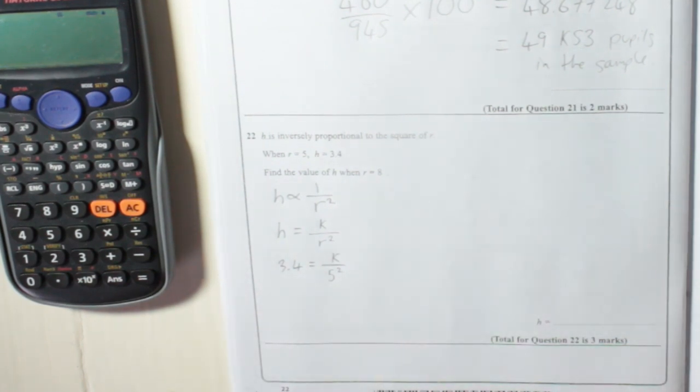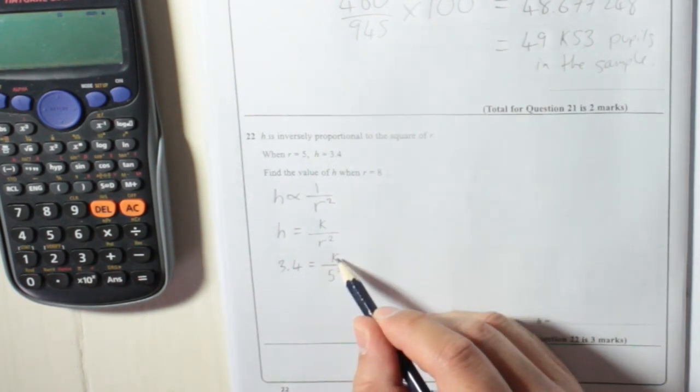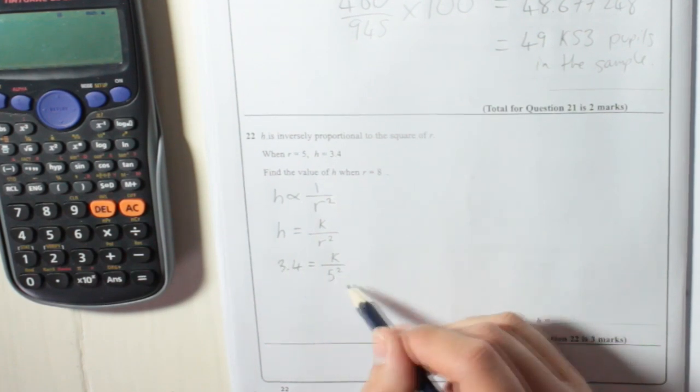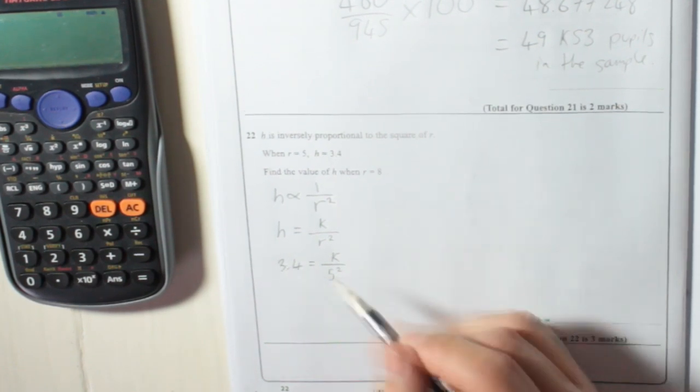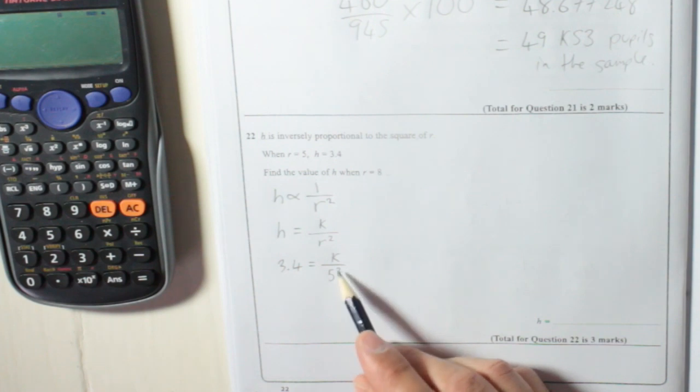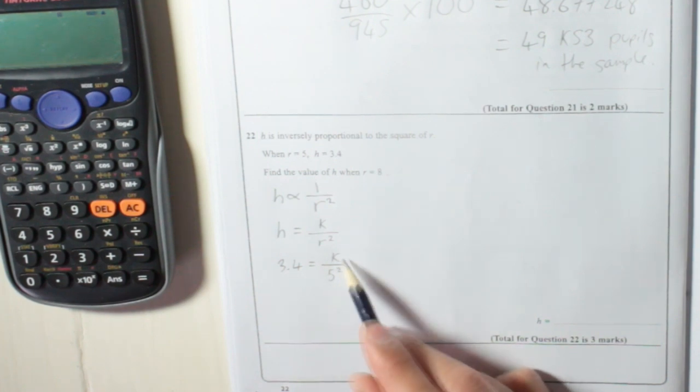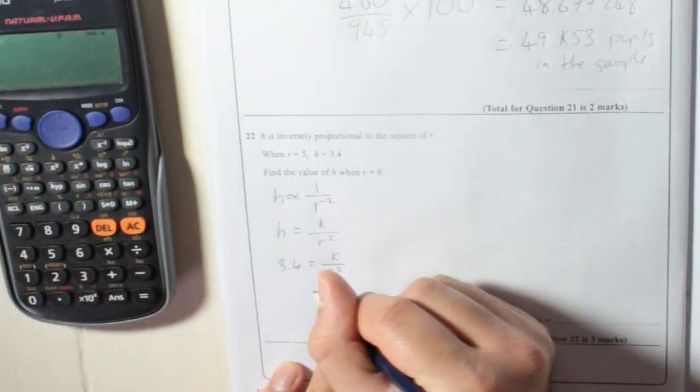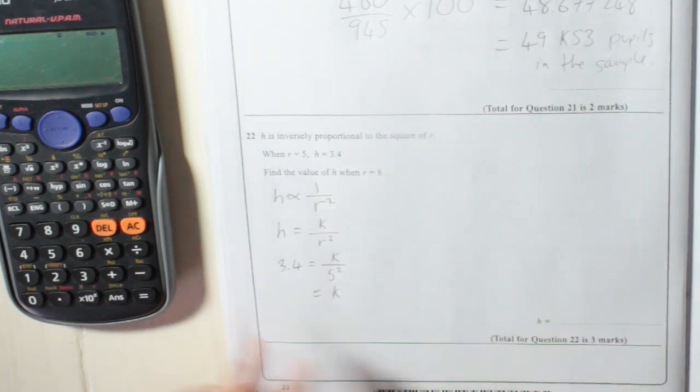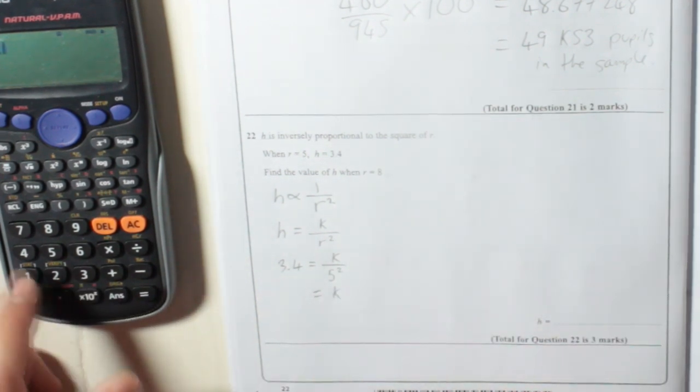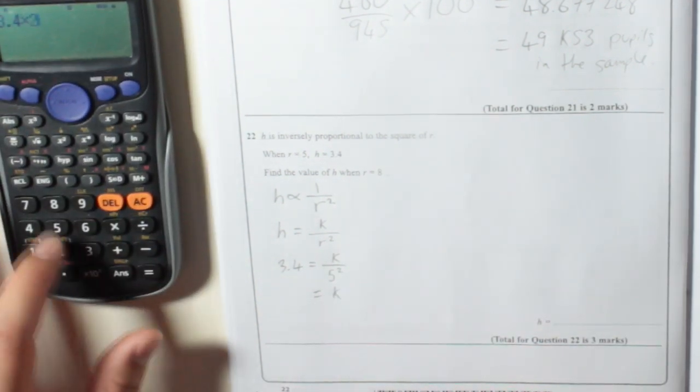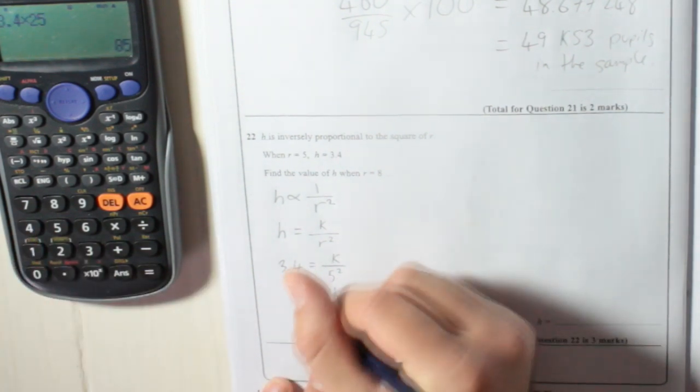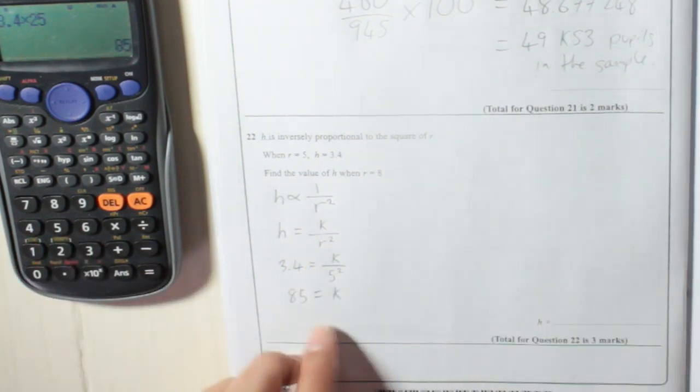So now, I can work out what k is by multiplying this side and that side by 5 squared, basically making it a subject of this formula, getting it on its own. So if I multiply by 5 squared, multiply by 25, you'll get rid of it. And then by multiplying 3.4 by 25, you'll find out what k is, 85. 85 equals k.